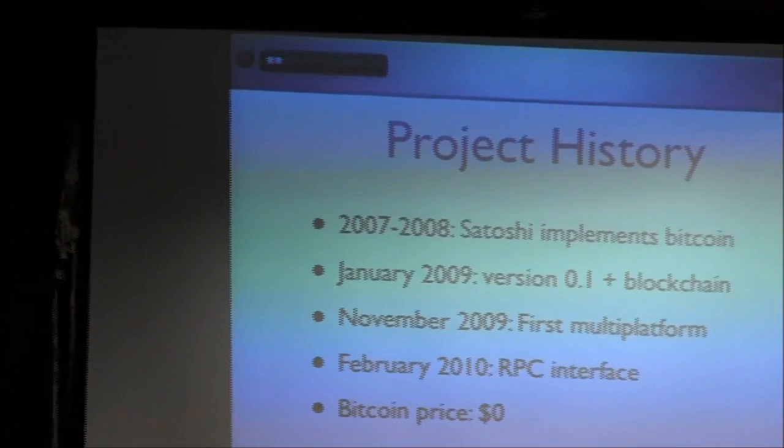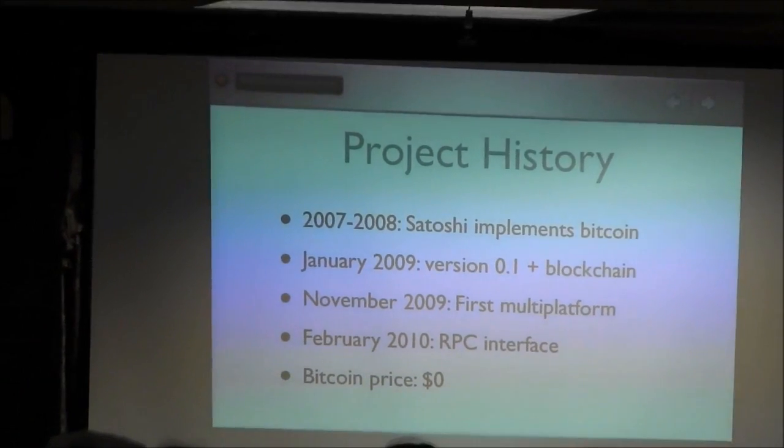It kind of bopped along — very few people knew about it. It was publicly announced on the Cryptography Mailing List in January of 2009, but it had very little traction all the way through 2009. In November 2009, the very first multi-platform version of Bitcoin was released; it was Windows only to start. In February of 2010, the RPC interface was released, which I think was key for making Bitcoin take off — once you can talk to Bitcoin and start creating services on the web, like exchanges, interesting things can happen.